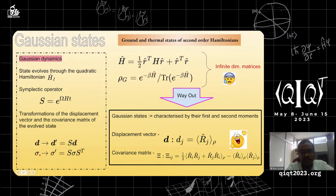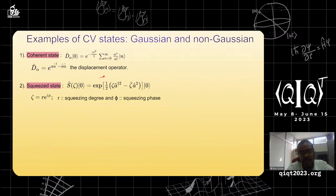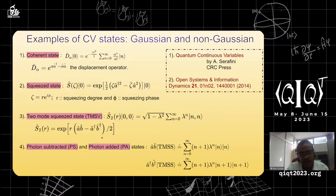Examples of CV states include the coherent state, used in key distribution, illumination, dense coding, and teleportation protocols. The squeezed state is highly quantum — one quadrature variable can have its uncertainty reduced below the vacuum level. The two-mode squeezed vacuum (TMSV) state has been heavily used in illumination and other entanglement-assisted CV protocols; in the limit of infinite squeezing it reduces to the EPR/Bell state. Non-Gaussian states, like photon-added and photon-subtracted states, have also been shown to be beneficial over Gaussian states in several information processing protocols.